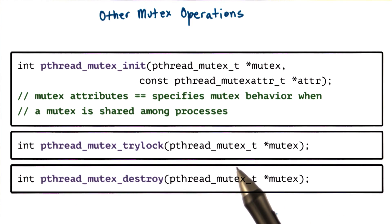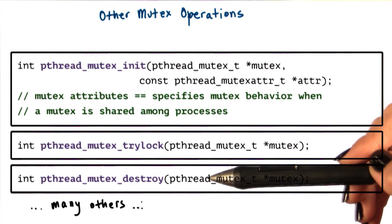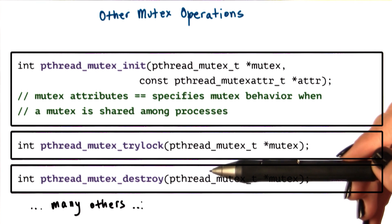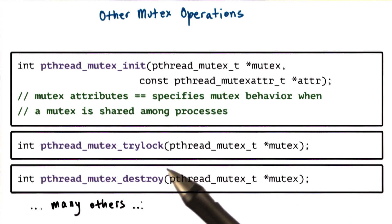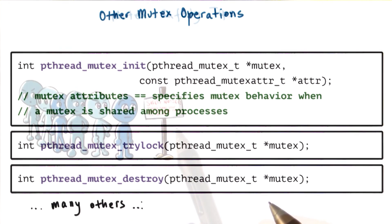You should also make sure to free up any pthread-related data structures. For mutexes, for instance, you have the mutex_destroy operation. These are just some of the operations pthreads supports for mutexes. The ones described here are enough to get you started with pthreads, and you can always refer to the pthreads documentation for information on the others.